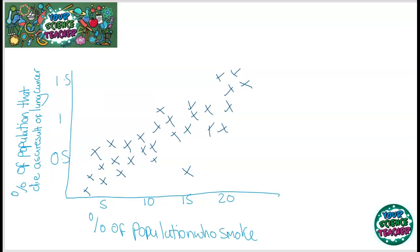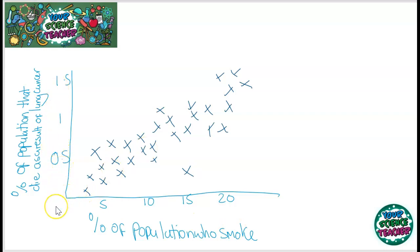Scientists often observe that lifestyle factors significantly increase your chance of contracting a non-communicable disease. However, a correlation between two things does not mean that one is the direct cause of the other. It is incredibly useful for scientists to find these correlations, but they need to then prove that there's a causal mechanism between the two variables. This is shown in a graph of the percentage of people who smoke versus the percentage who die as a result of lung cancer, taken from different countries around the world, showing a positive correlation.